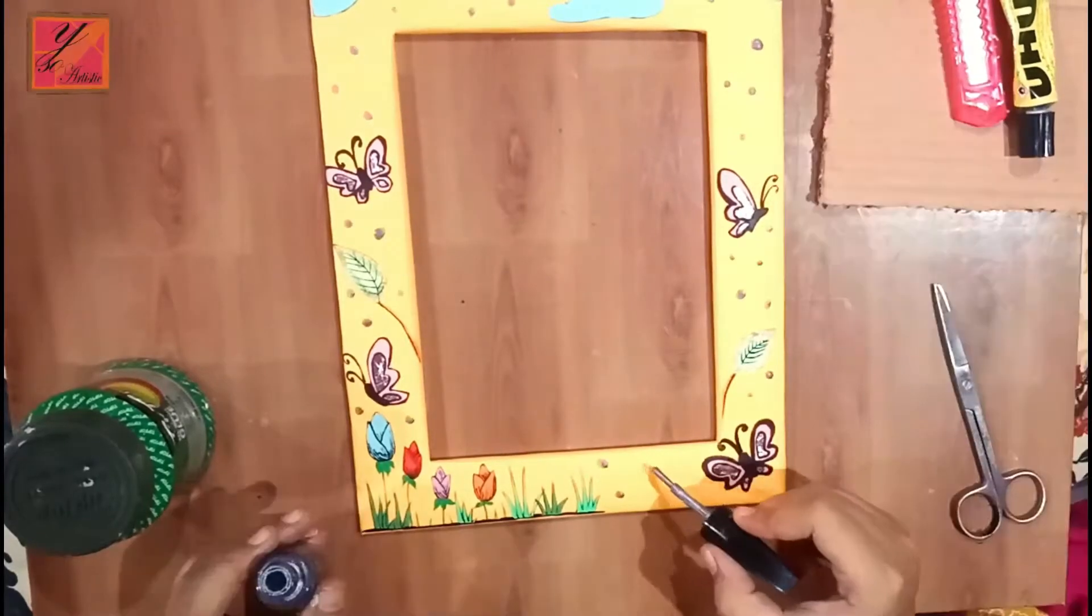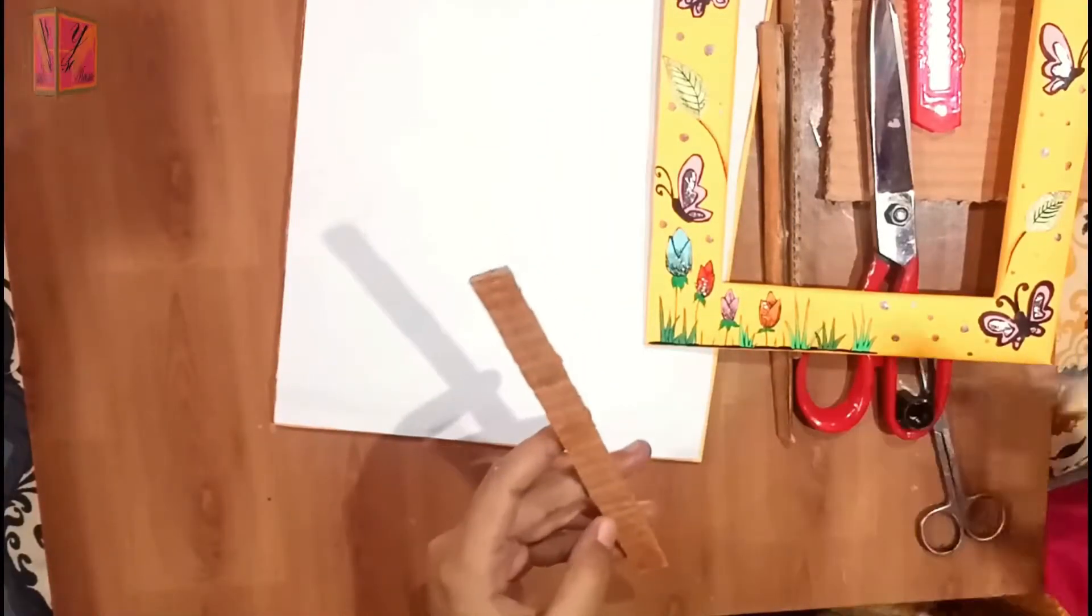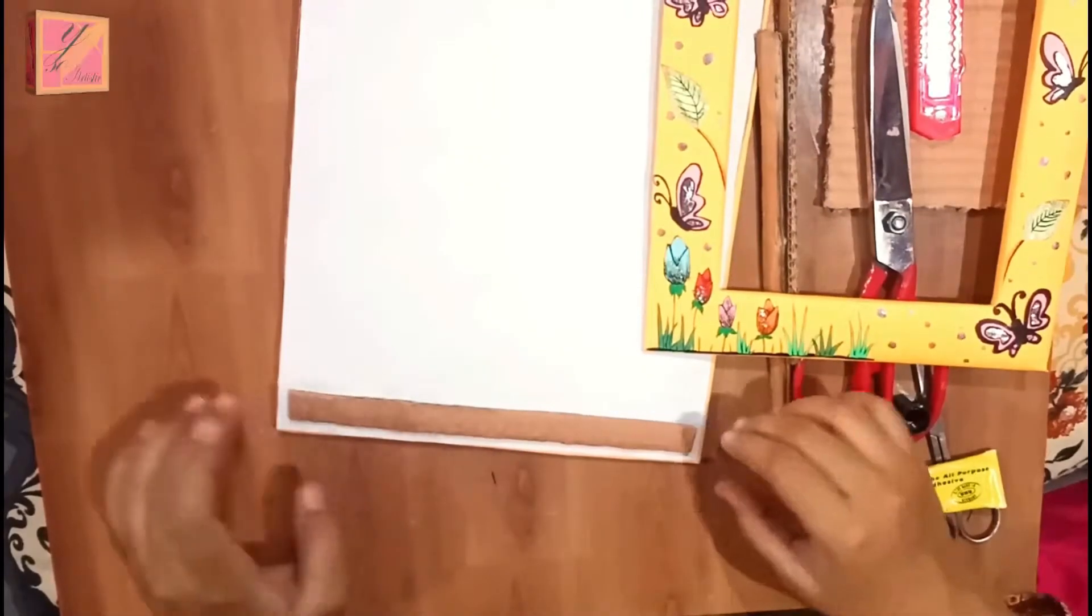Now we will make a dotted pattern. I have made it with nail polish. If you want, you can change the color.